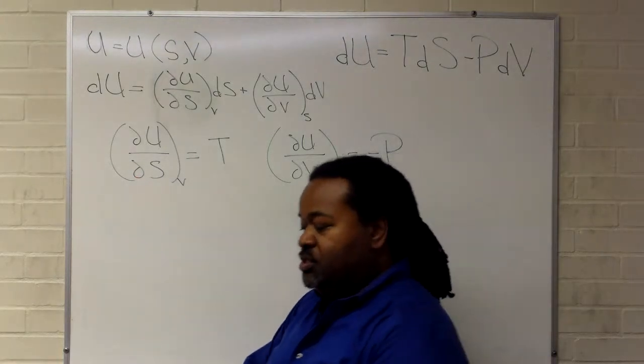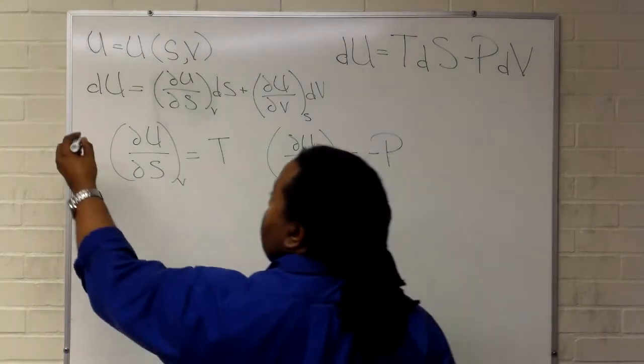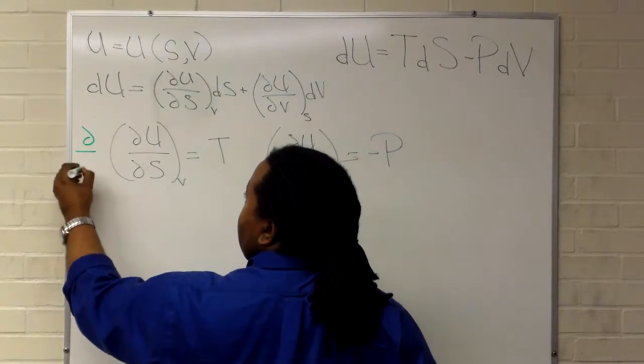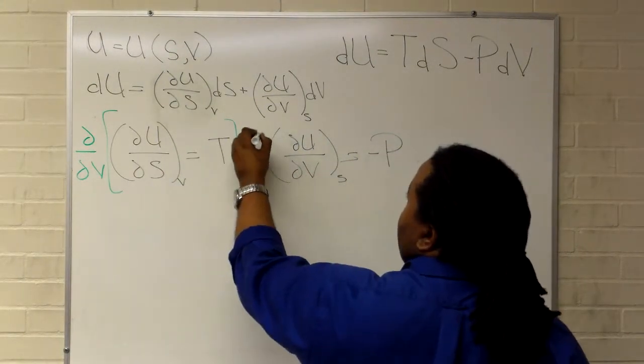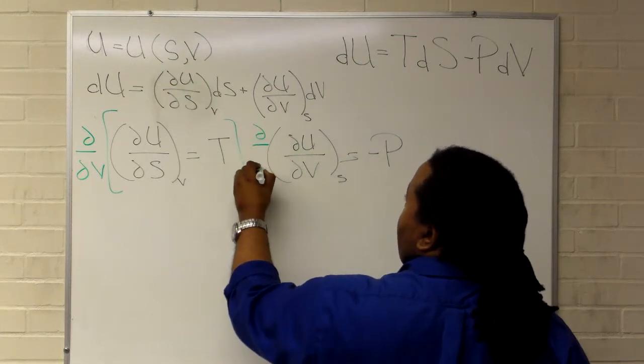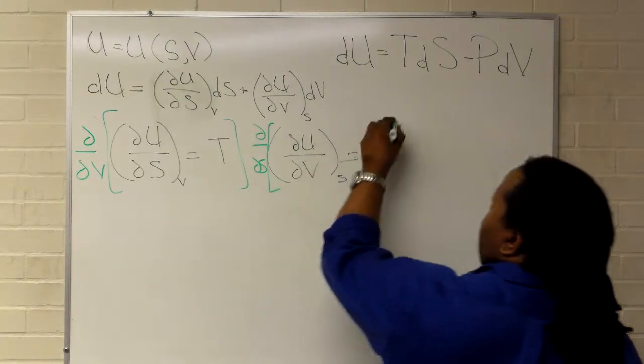So if we already have the partial for s, then what we're going to do in green here is we're going to take the partial with respect to v on both sides, and here we're going to take the partial with respect to s on both sides.